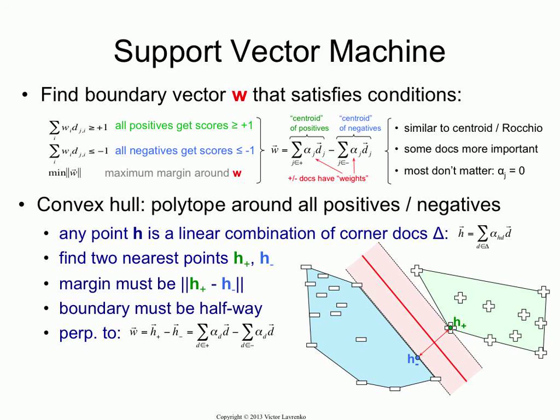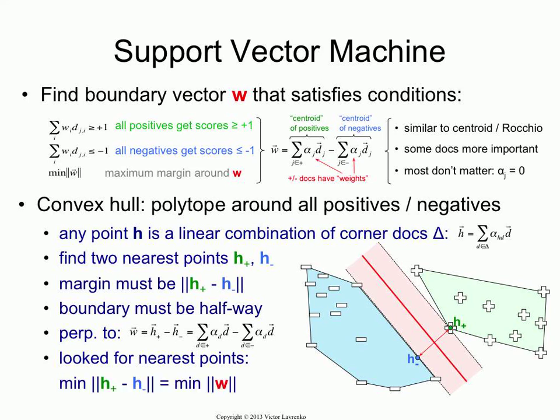Now you know why the SVM solution has exactly this form. Why are you minimizing W? That comes directly out of this: I was looking for two points H plus and H minus which are closest to each other, so I'm minimizing the distance between them. And the distance between them is exactly the size of the weight vector. If you're trying to make sense of support vector machines, I find that this way of thinking gives a lot more intuition than the standard derivation.